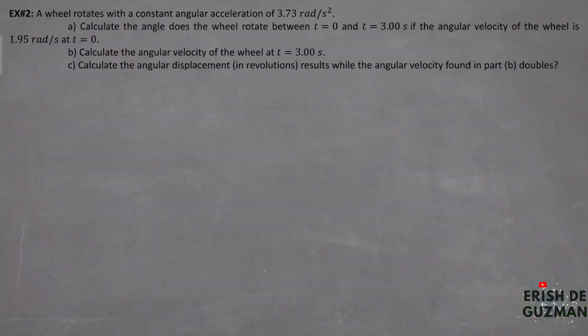Example number two: A wheel rotates with a constant angular acceleration of 3.73 radians per second squared. Letter A: calculate the angle the wheel rotates between t equals 0 and t equals 3 seconds if the angular velocity is 1.95 radians per second at t equals 0. Letter B: calculate the angular velocity at t equals 3 seconds. Letter C: calculate the angular displacement in revolutions while the angular velocity found in part B doubles. Note that both the angular acceleration and initial angular velocity are positive, meaning the rotation is strictly counterclockwise.